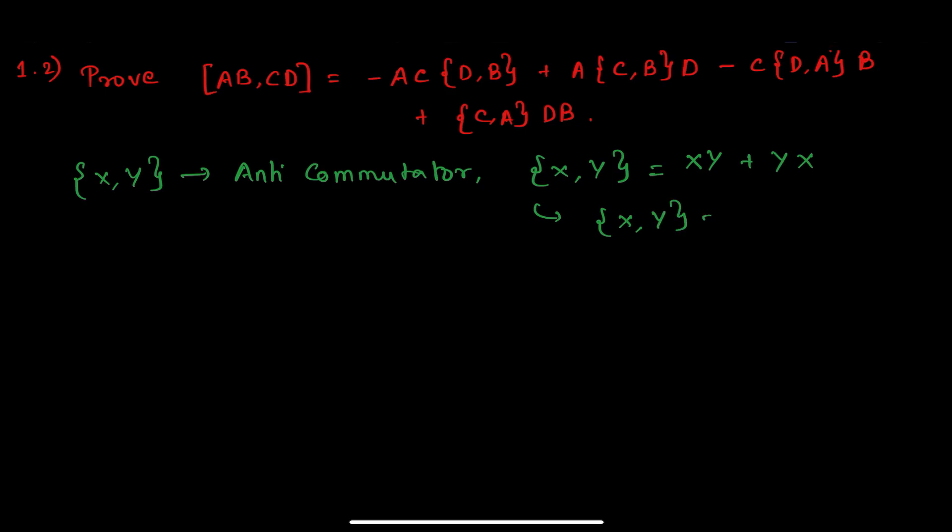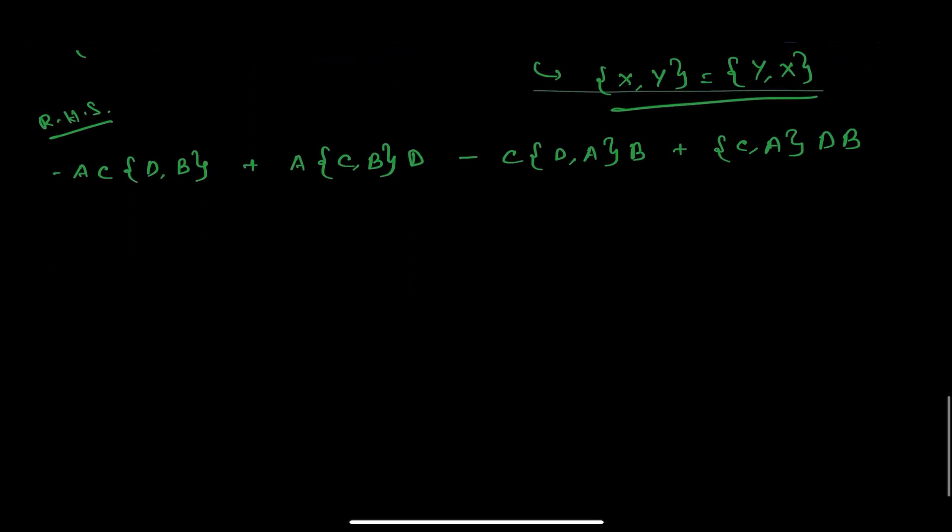So we'll start from the RHS. We have been given -AC{D,B} + A{C,B}D - C{D,A}B + {C,A}DB. We'll just open the brackets here.